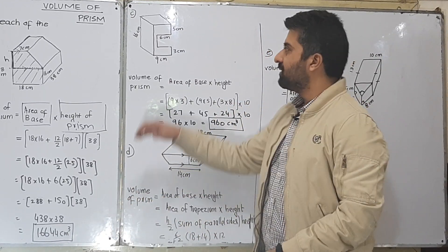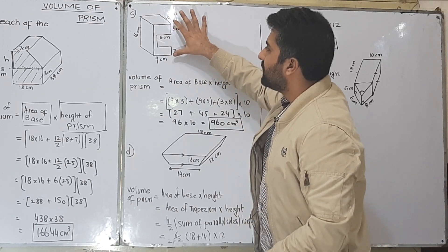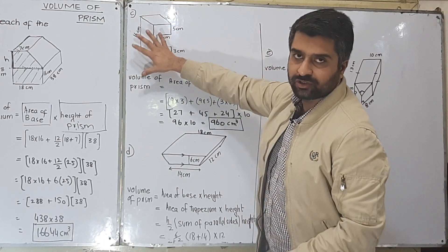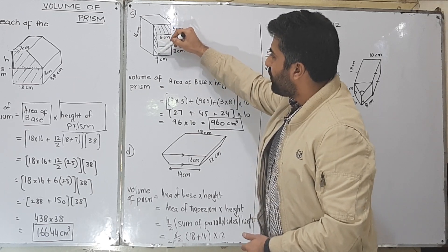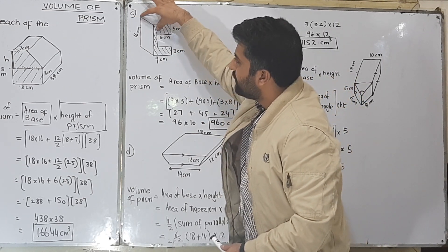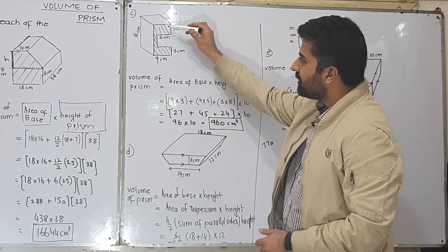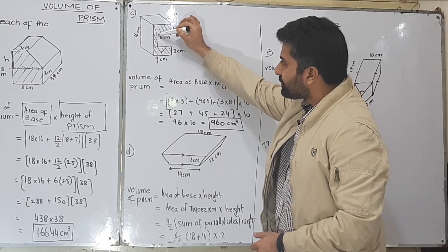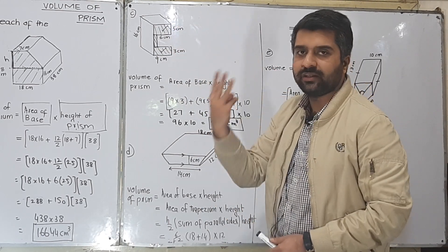Part C of question 1: this shape is a prism. Its front end and back end are the same, and if you take a cross section at any point you find the same shape — that is the property of a prism. This is the base. I find the area of this base by dividing this shape into three rectangles.